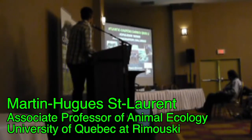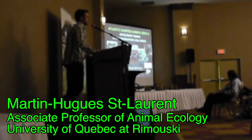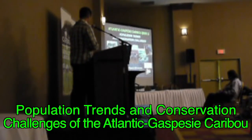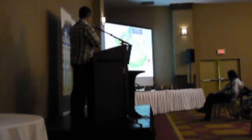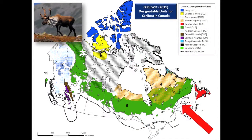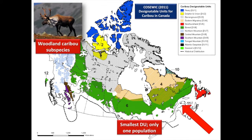I'm talking about what I'm going to be calling the Gaspésie caribou, to make it short, the DU11. This caribou population is usually discussed in French but I tried to make it clear in English. You saw that map a couple of times today — I'm going to draw your attention to this small dot here. The Gaspésie caribou belongs to the woodland caribou subspecies.